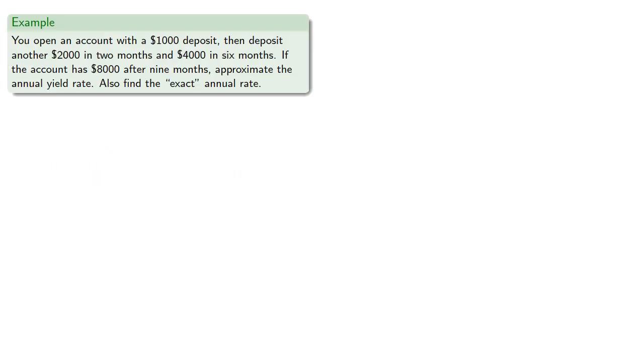For example, suppose we open an account with a $1,000 deposit, then deposit another $2,000 in 2 months and $4,000 in 6 months. If the account has $8,000 after 9 months, approximate the annual yield rate.